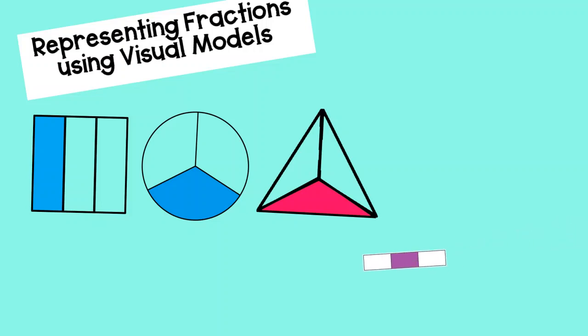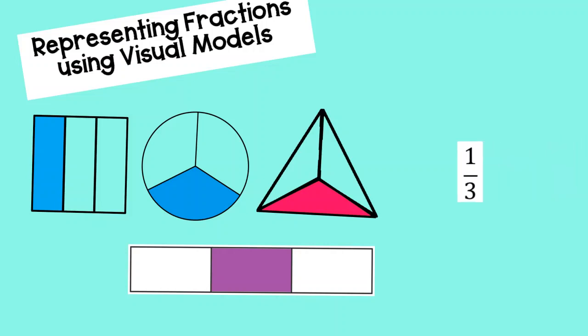And a final shape that we use, and this one is probably the most common, it has a lot of different names. Some people call it strip model. Some people call it tape model. Some people call it a bar fraction. In any case, it's just a long, skinny rectangle. And the beauty of this as a model is that you can make the rectangle as long as you need to represent whatever fraction. It's a very versatile model. So, again, in this particular case, we have one part shaded out of three or one-third.